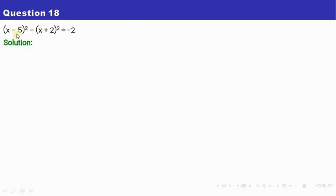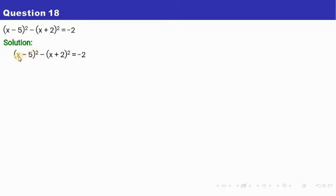Here we need to find the value of x by simplifying this particular equation. Now here we have been given x minus 5 whole square. If you know the formula for a minus b whole square, then you can directly put the formula out here. But if you don't know the formula, then we can write x minus 5 whole square as x minus 5 into x minus 5.